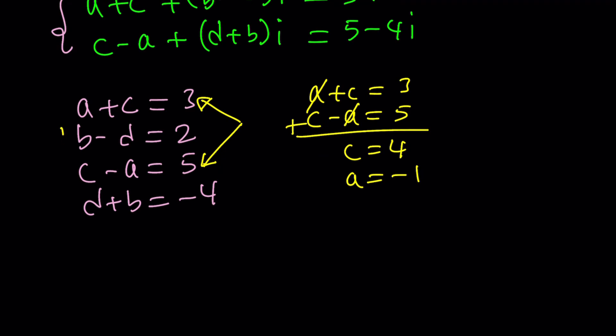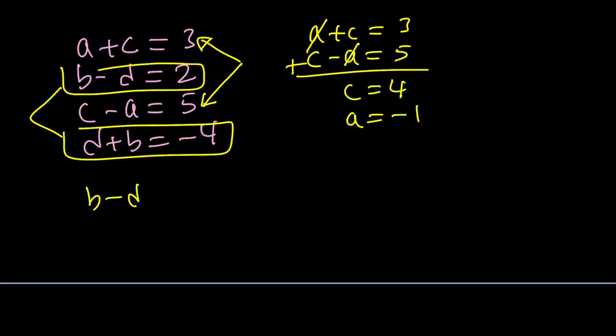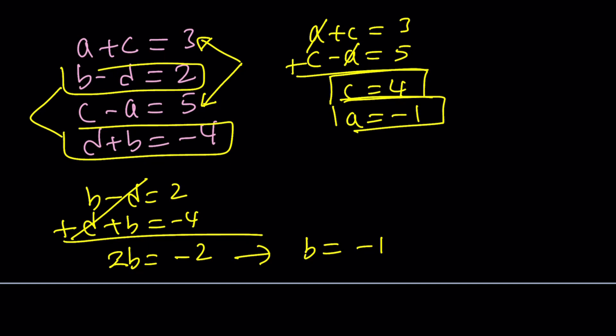Now use this one along with this one. So now we get B minus D is equal to 2, D plus B is equal to negative 4. Add those up, D is going to cancel out. To be or not to be is negative 2. B equals negative 1 from here. And what is D? D equals negative 3. Let me check my work. Negative 1 plus 3 is 2. Okay good. So I got it right.